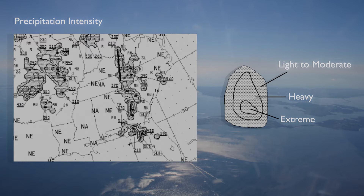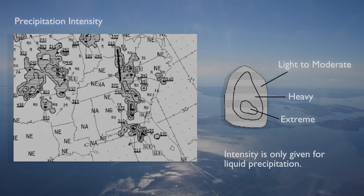The third contour depicts areas of extreme precipitation. These areas contain very heavy rain and hail which is pea size, marble size, or larger. Intensity information is shown for liquid precipitation only. It is not depicted for solid precipitation such as snow.